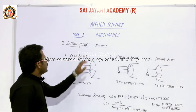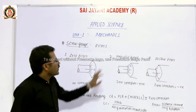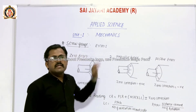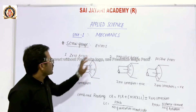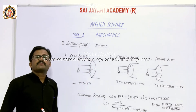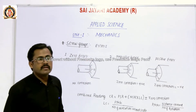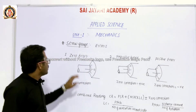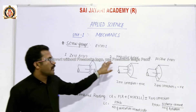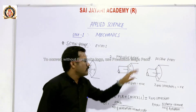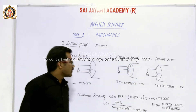Next, screw gauge errors. There are mainly three types of error in a screw gauge. The first one is zero error, the second is negative error, and the third is positive error.